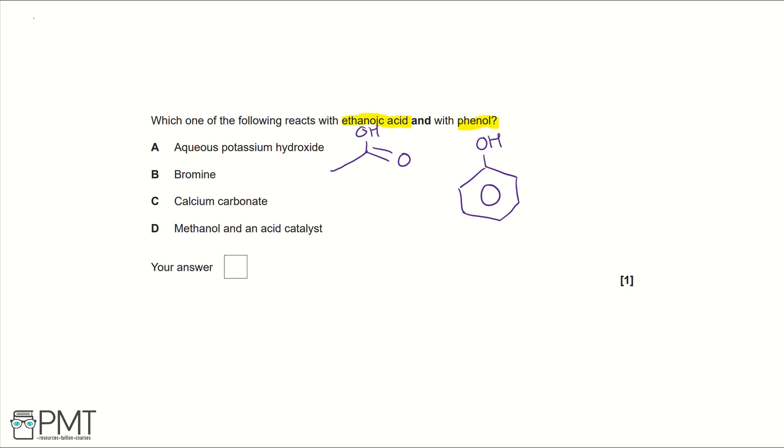For these questions, I'm going to draw the organic products of the reactions rather than the byproducts. Looking at A first, aqueous potassium hydroxide will form a carboxylate ion with ethanoic acid where we have the double-bonded oxygen, but this OH becomes O minus and then bonds with the potassium positive ion K+. A similar thing happens with phenol where the O from the OH becomes O minus and bonds to the potassium ion. So A does react with both, so it's very likely this is our answer.